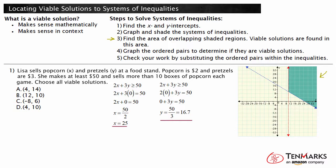To determine if a solution is viable, graph the ordered pairs and determine if they fall within the region. Choice A is (4, 14). We can plot this point on the coordinate plane to see if it is a viable solution. This does not fall within our shaded region, so this is not a viable solution. We can cross out choice A. Choice B is (12, 10). Let's plot this point. This point does fall within the shaded region, so it is a viable solution. Circle choice B.